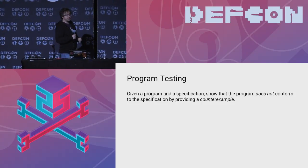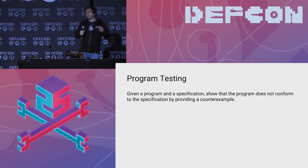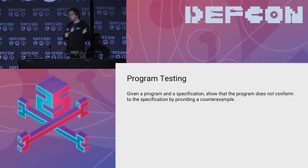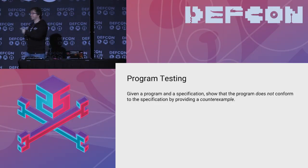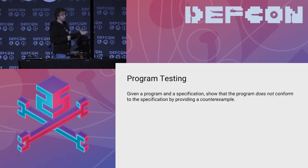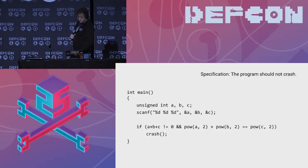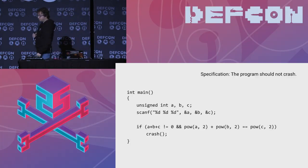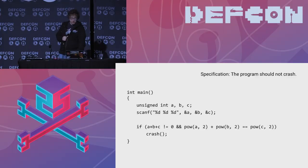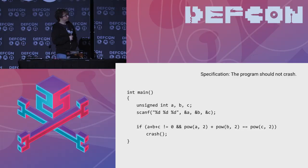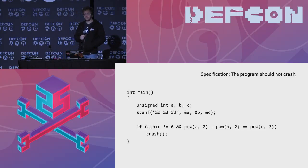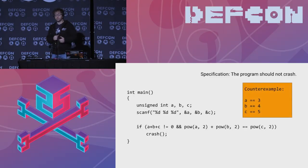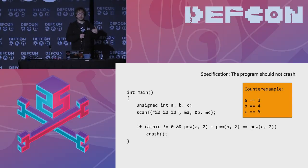Program verification, while a very useful field — there is verified software and hardware out there — is not the final answer on its own. So we also need the flip side. Program verification can say 'that is safe,' but when it can't reason about things, the flip side is a technique that says 'that is not safe, I can prove it.' If it is not safe, I'll give you a counter example. In this case, with a condition of a squared plus b squared equals c squared, a technique might find a=3, b=4, c=5 as a counter example that reproduces a crash.